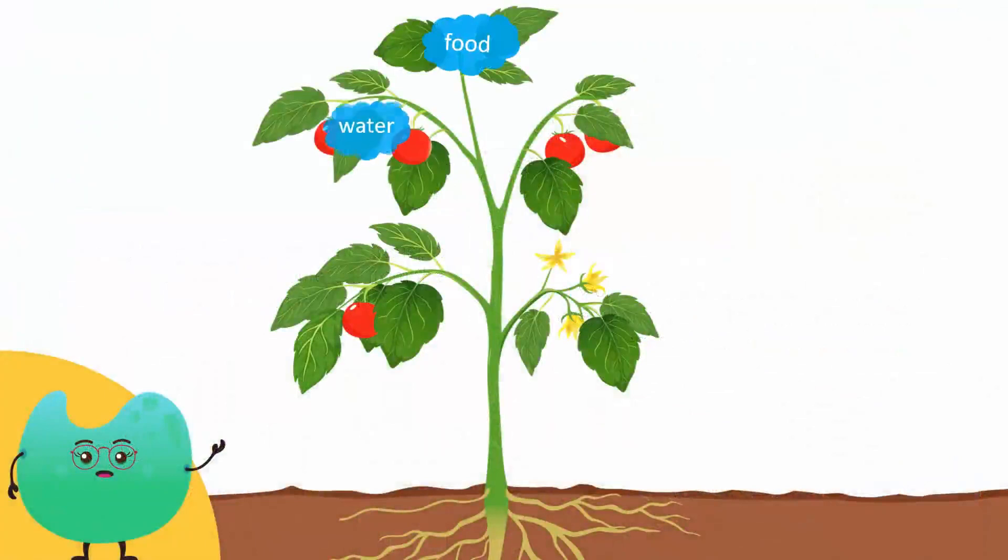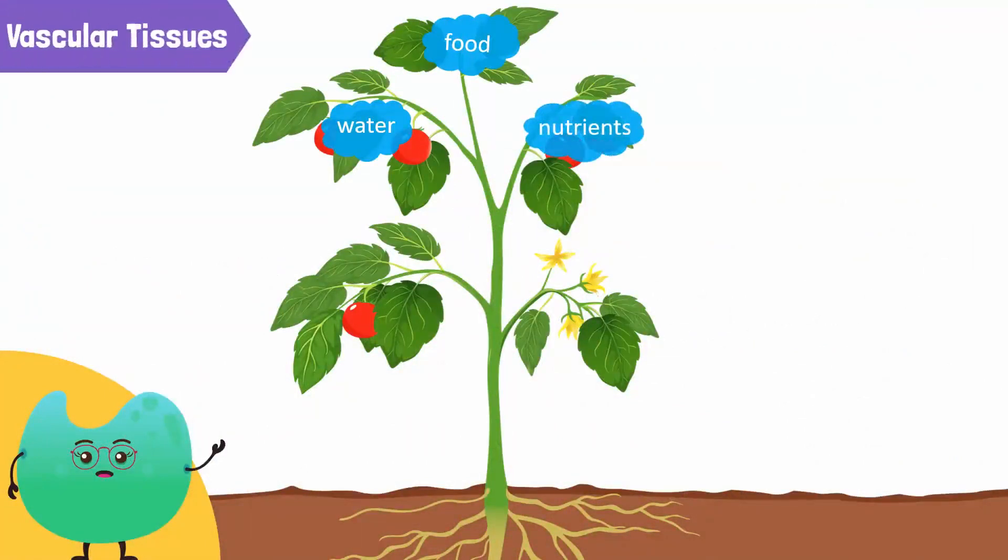Plants transport food, water and other materials with the help of their own vascular tissues or bundles. This vascular bundle is composed of xylem and phloem.